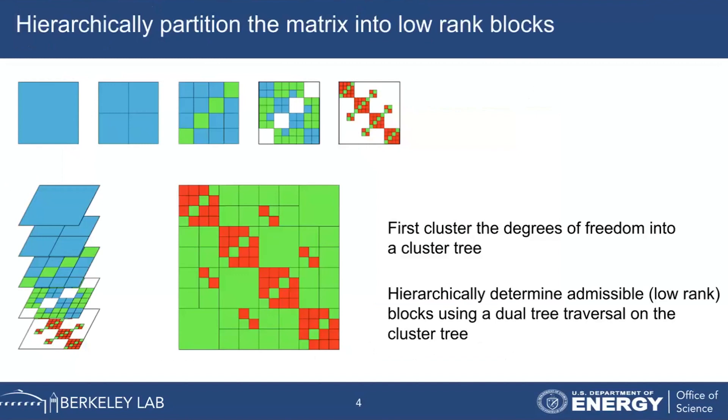So how do we construct this hierarchical matrix? First thing we do is we cluster the degrees of freedom into a cluster tree, something like a KD tree or an axis-aligned bounding boxes tree. If we take pairs of these clusters, then those pairs would define blocks within the matrix. And we want to find out if that matrix can be approximated or not by a low rank matrix.